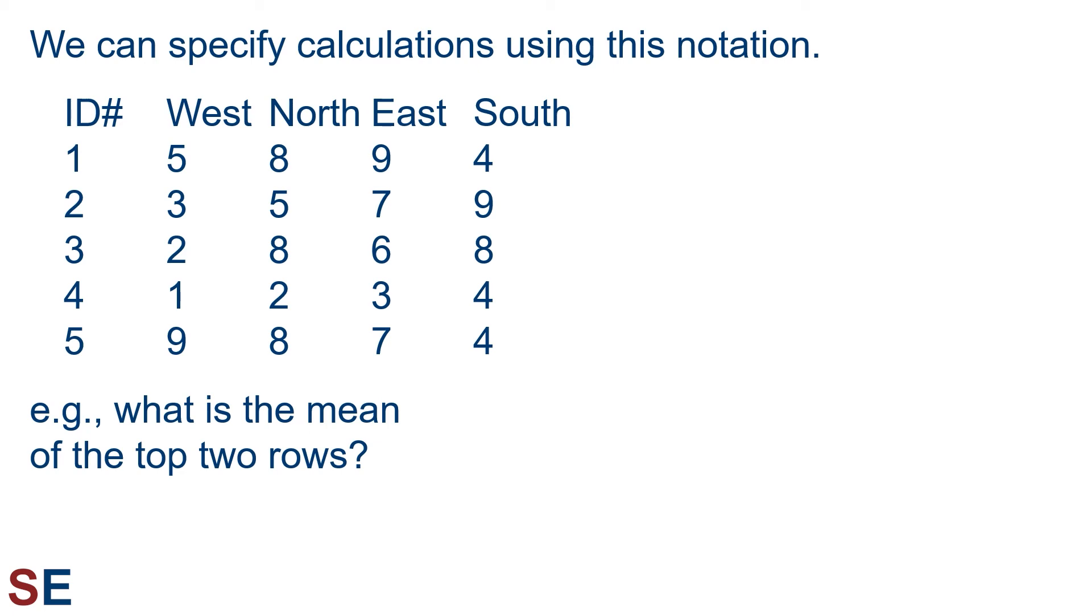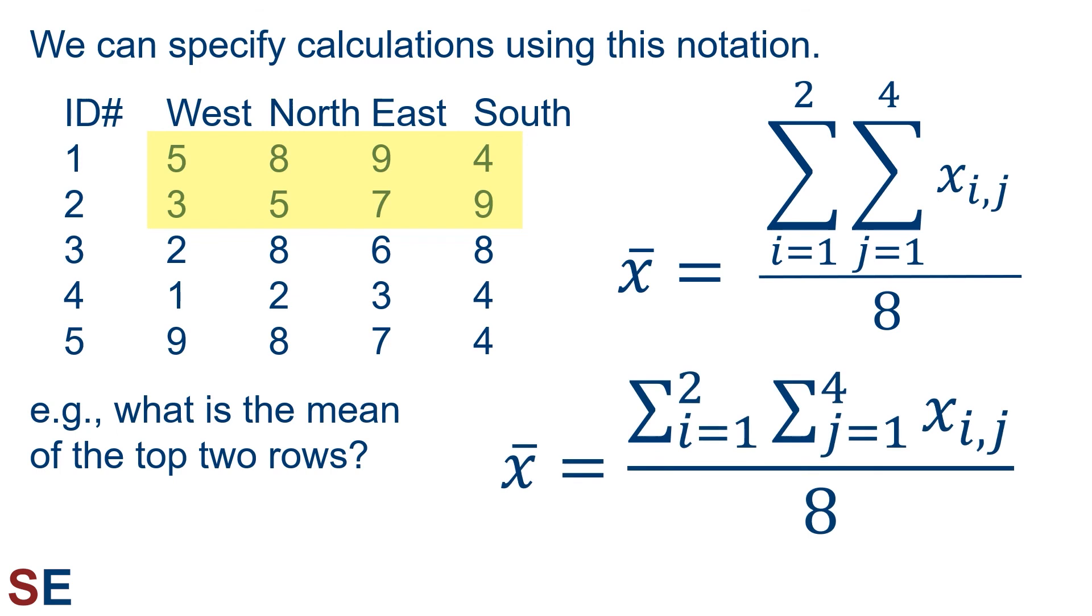Okay, so what do we use all this for? The answer is that we can specify calculations using this notation. For example, what is the mean of the top two rows? The mean is just the sum of all the values divided by how many there are. In our equation, the mean is represented by a bar above the x. Using our double summation nomenclature, that's equal to the sum for i from 1 to 2 of the sum for j from 1 to 4 of x i comma j, all divided by 8 because that's how many values there are. This second equation is the same, but with the symbol shown in a more condensed format. This is more commonly done in textbooks, and you can see how the information about the ranges of the dummy variables are specified in a similar manner.